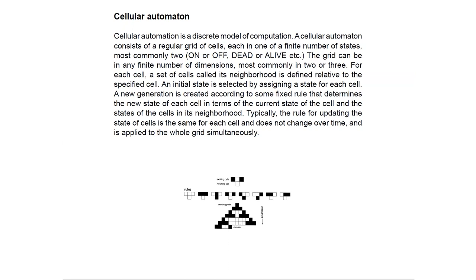Originally you would have only two states: on or off. In Conway's Game of Life they are called dead or alive — basically two binary states like white or black. In 1D cellular automata you define a neighborhood — obviously you have only two neighbors — and on the bottom you have the rule: given the state of a cell and its two neighbors, this is the result.